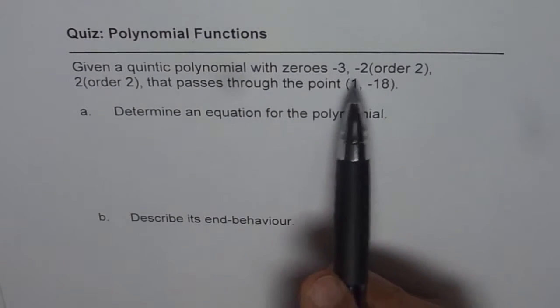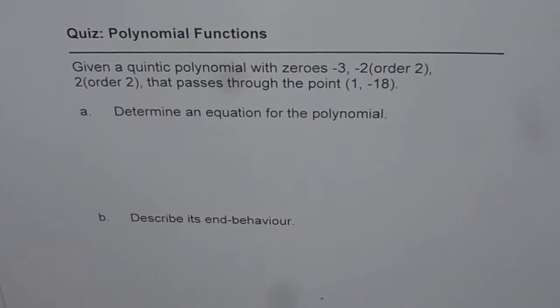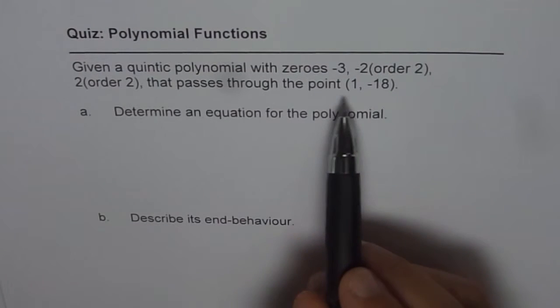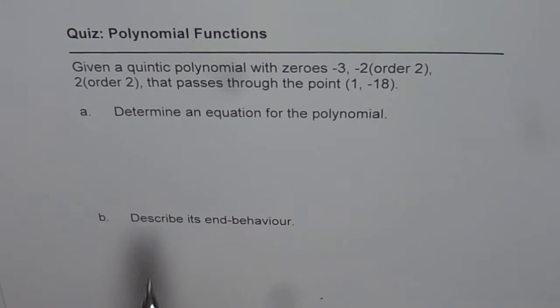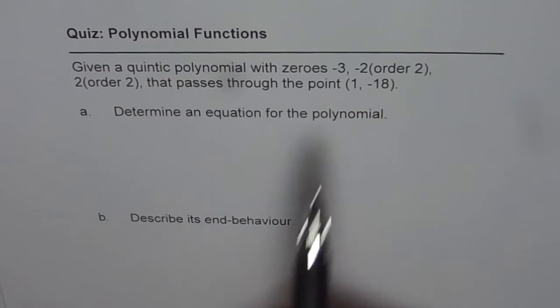So we are given three zeros here, one of them is a linear zero, the other two are of order 2. And the graph of this quintic, that means degree 5 polynomial, passes through the point (1, -18). Part A of the question is determine an equation for the polynomial, and B is to describe its end behavior.